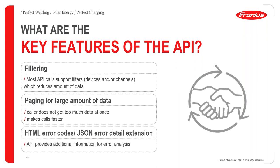The key features of the API include filtering — most API calls support filters for devices and/or channels, reducing the amount of data returned per call. There is also paging for large amounts of data, so the caller doesn't receive too much data at once, making API calls faster. Additionally, HTML or JSON error extensions provide additional information for error analysis, allowing troubleshooting directly from the API key being used.